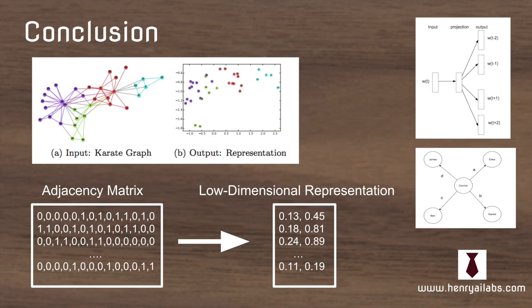So in conclusion, we've seen how DeepWalk and Node2Vec are used to convert adjacency matrices into low-dimensional representations. This is done using random walks in the skip-gram model. Thanks for watching.